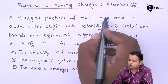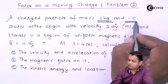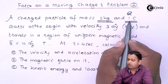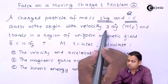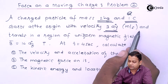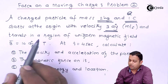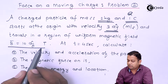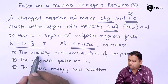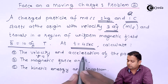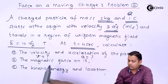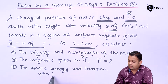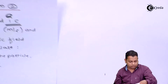From the problem statement, mass is 2 kg. Q, which is very important in finding such types of problems, is equal to 1 coulomb. The velocity is given as 3 Ay cap meter per second and it starts from the origin. The magnetic field given is 10 Az cap Tesla. At this time instant we are to calculate velocity V, acceleration a, magnetic force F bar, and kinetic energy KE at the particular location.